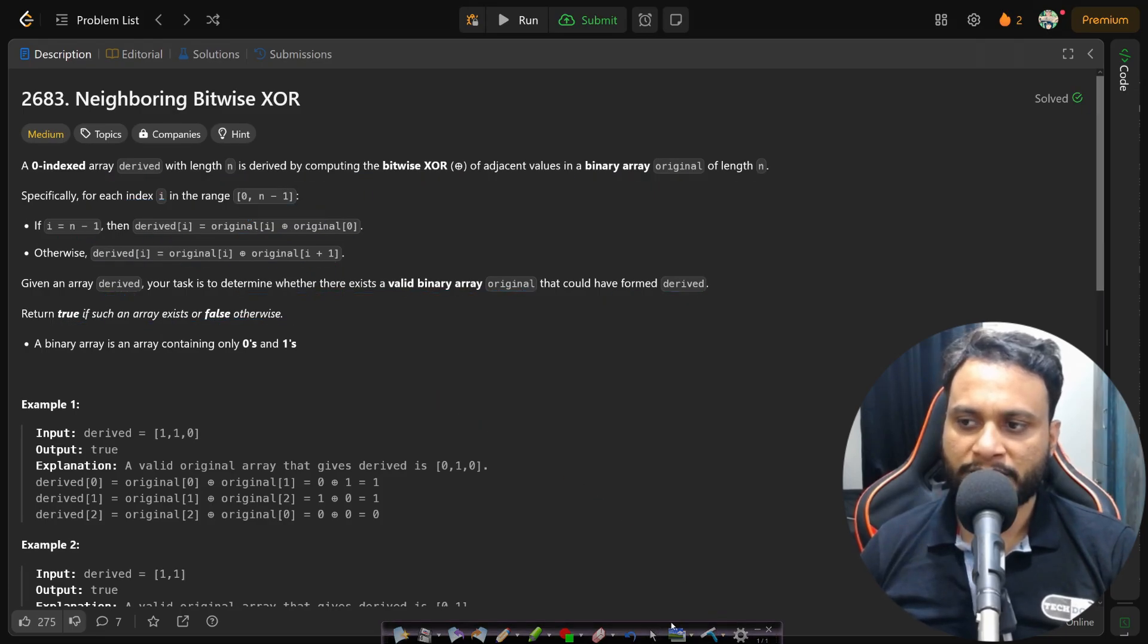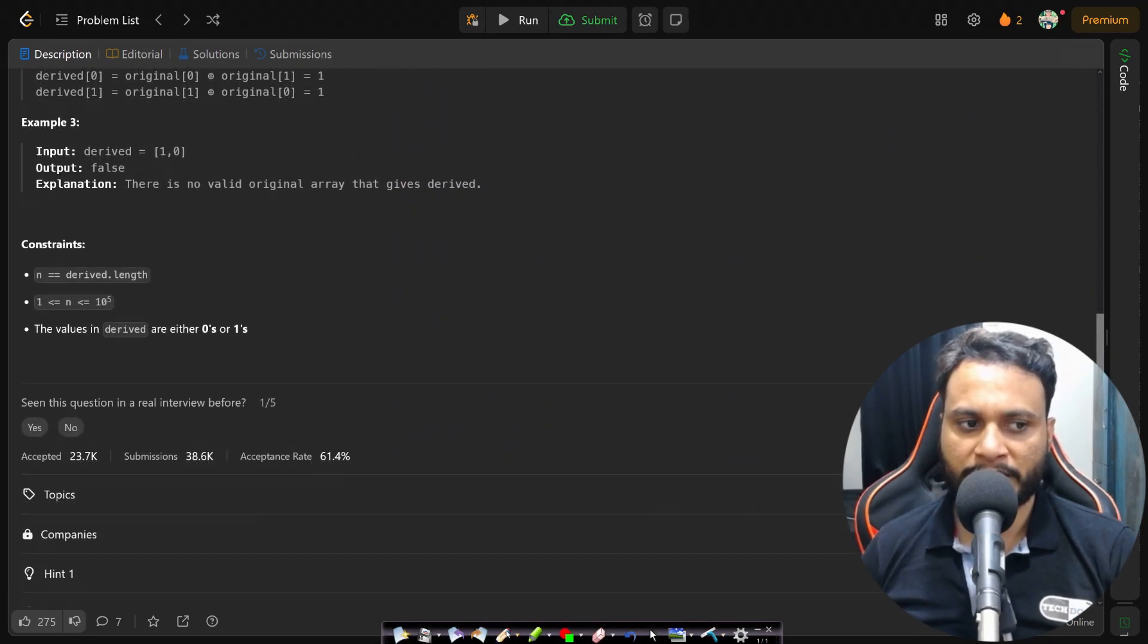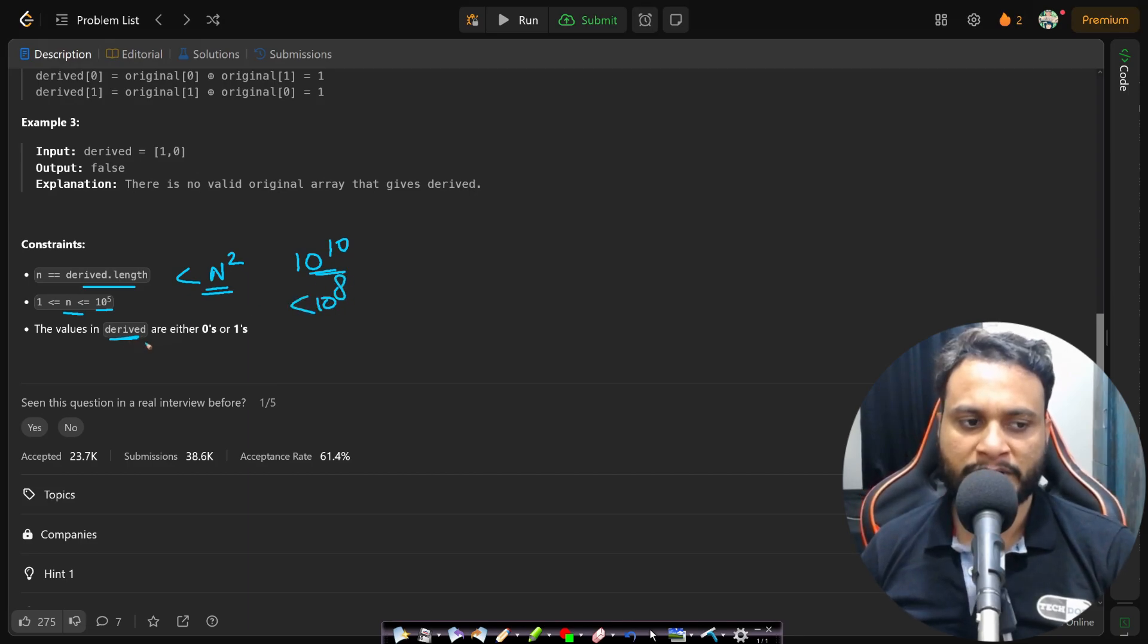Now let's look at the constraints before we look at an example. In this particular case, the length of the derived array is 10^5, so definitely we need to write an algorithm which is better than n squared, because that will make it 10^10. We need something less than 10^8, and each of the values in the derived array is either 0 or 1.